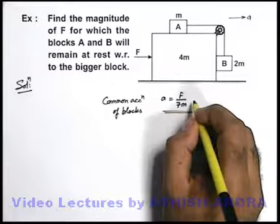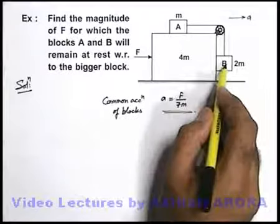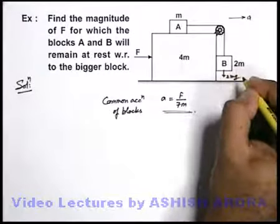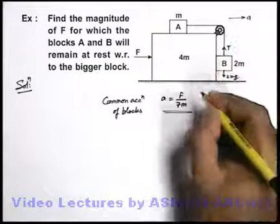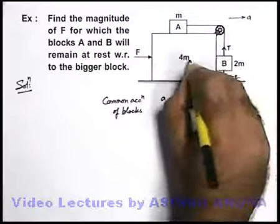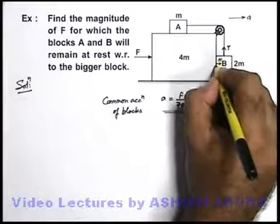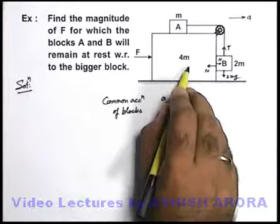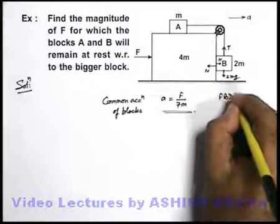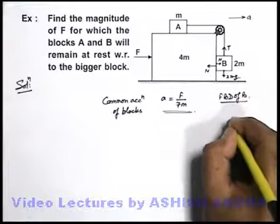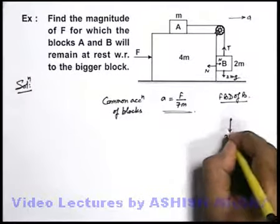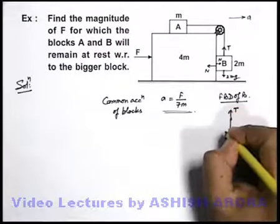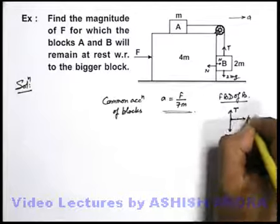Now if we draw the free body diagram of these 2 blocks, we can see that block B is experiencing its weight 2mg in the downward direction. A tension will act on it in the upward direction. Due to the push of the 4m block, a normal reaction will act on B. So if we draw the free body diagram of B, it experiences a force 2mg downward, tension upward, and a normal reaction toward the right.